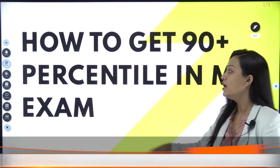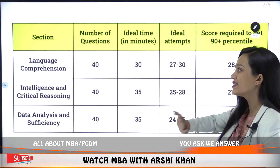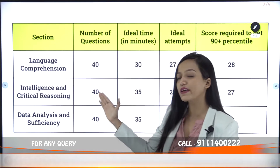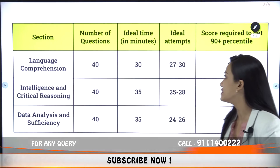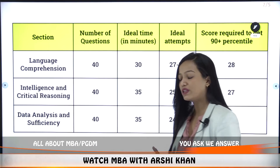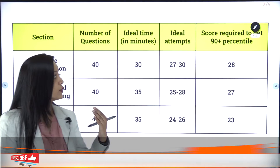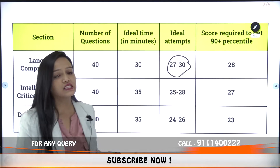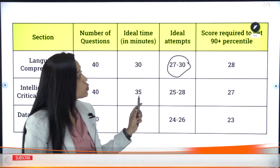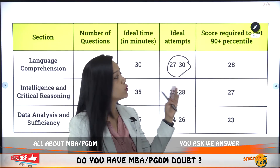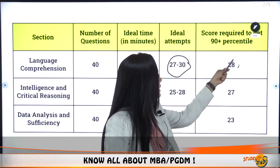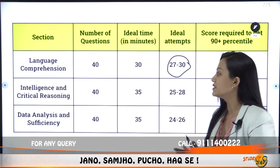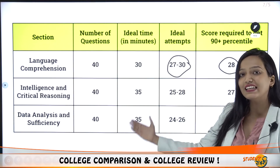We will discuss that now in a very short video. First of all, Language Comprehension — if we talk about 40 questions in Language Comprehension, the ideal time is 30 minutes. The ideal attempt is 27 to 30 questions, and the score required to get 90 to 95 percentile should be around 28.